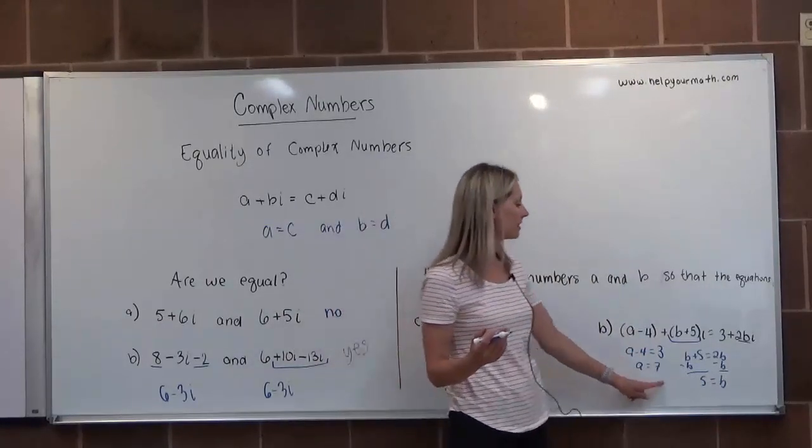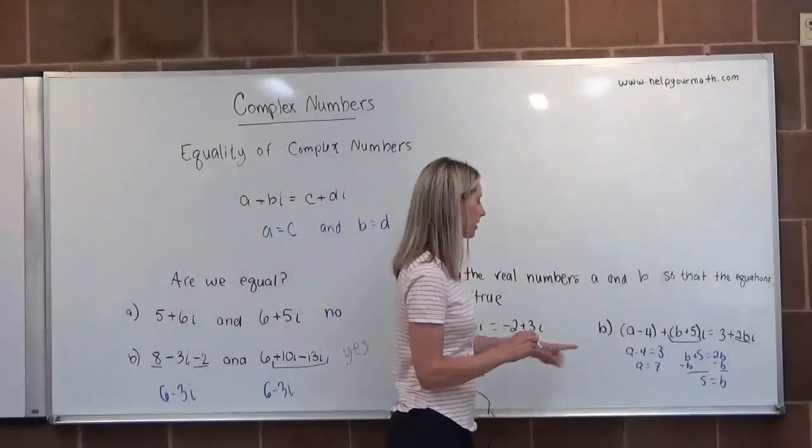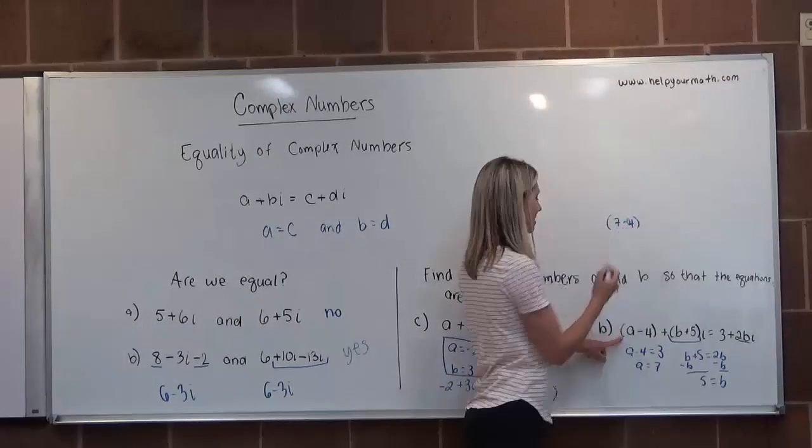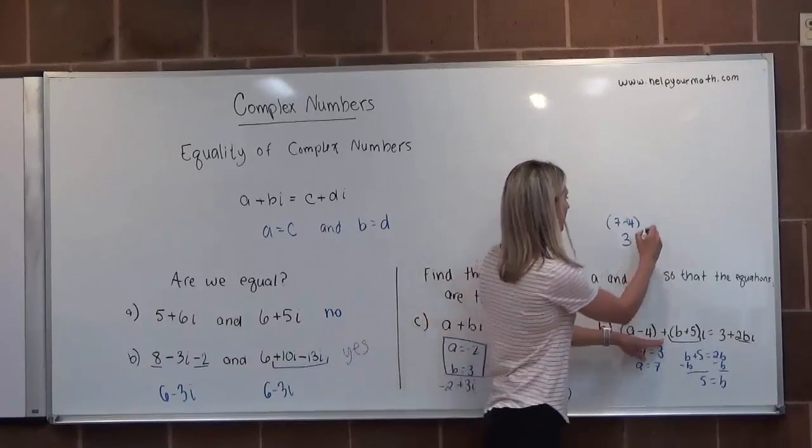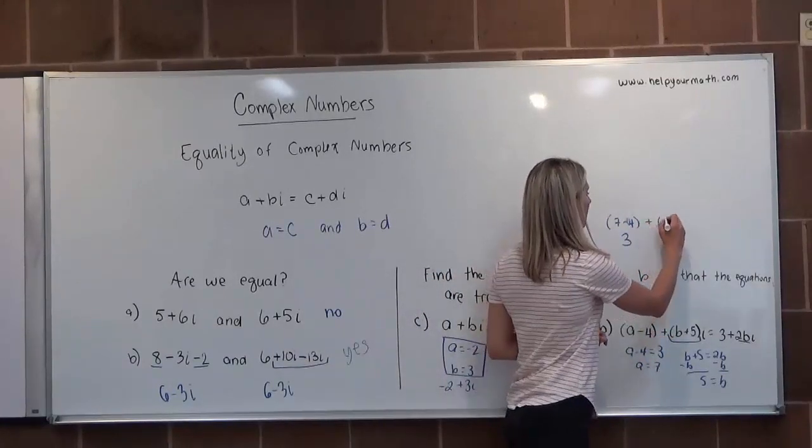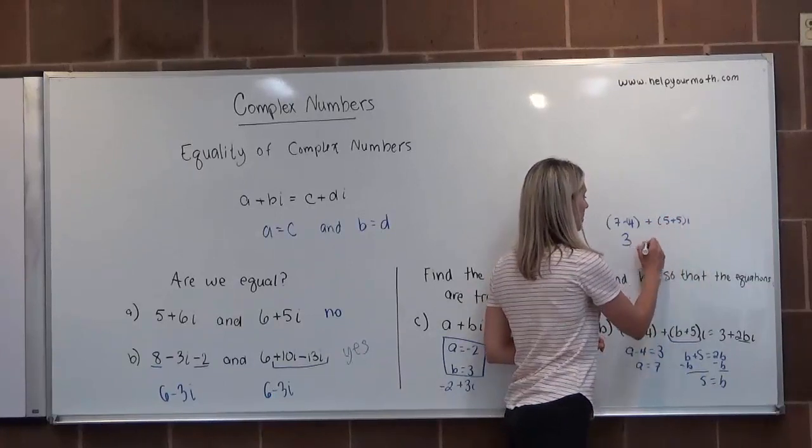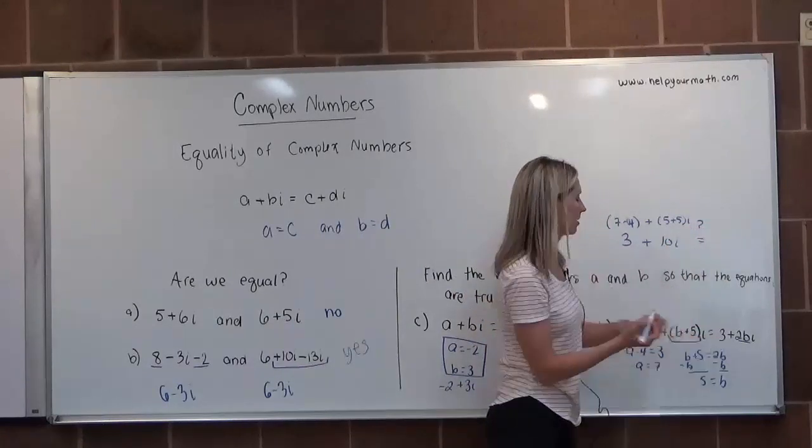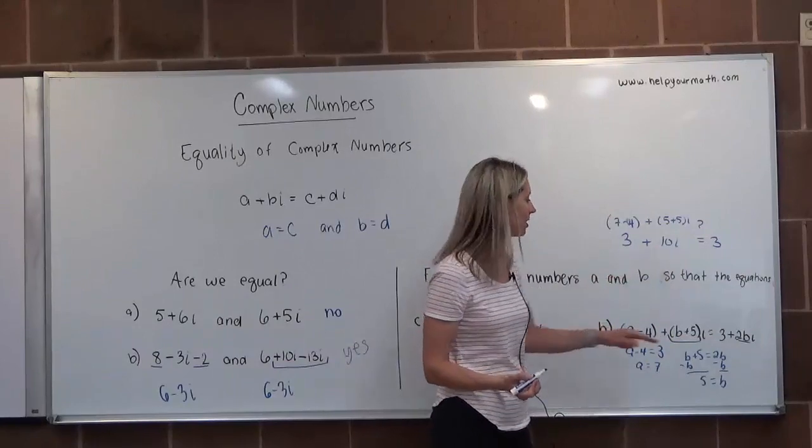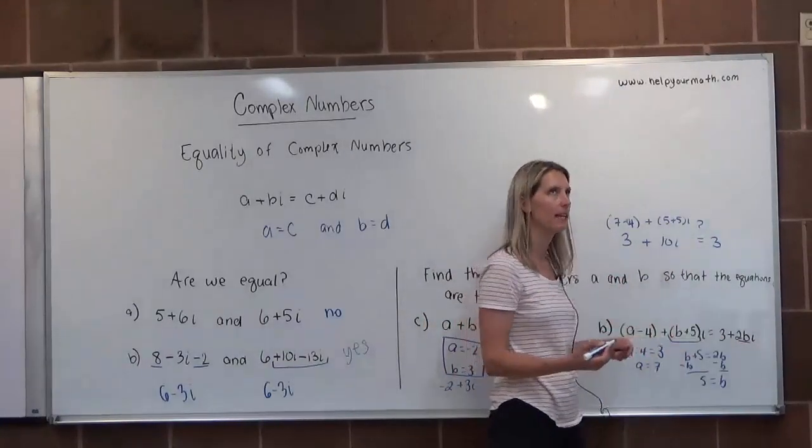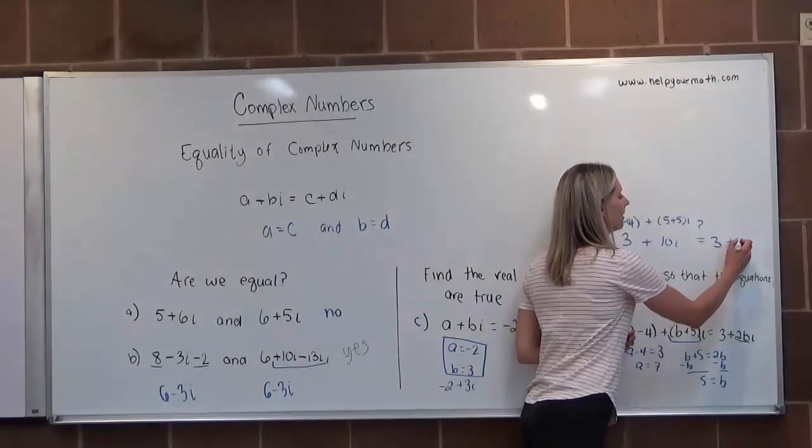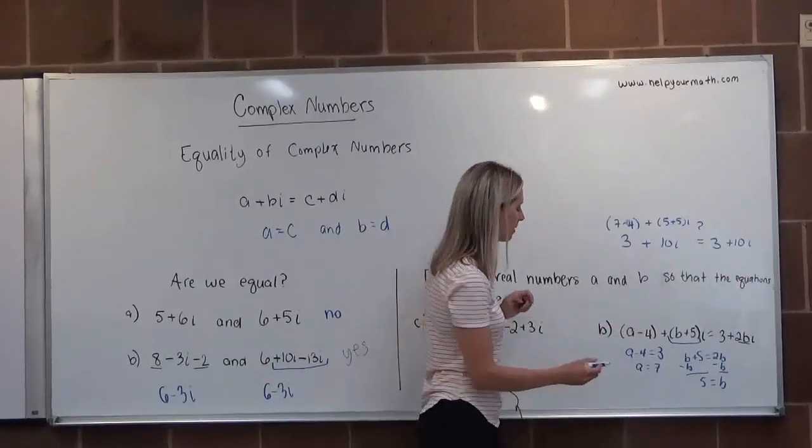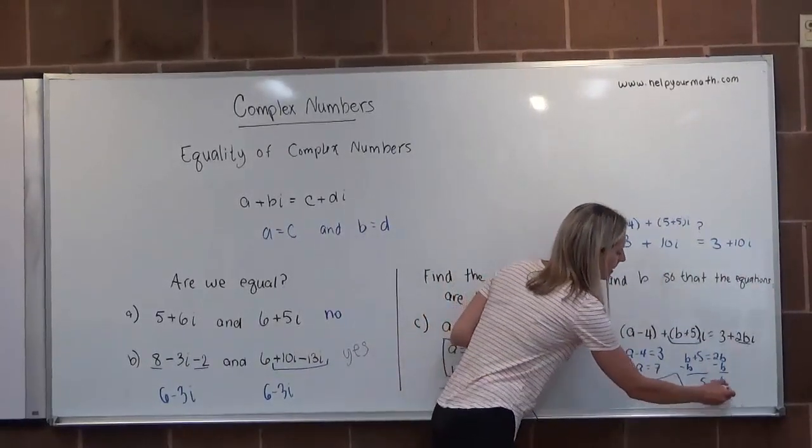Let's double check this. Let's plug in 7 and 5 and make sure we end up with two numbers that truly are equal. If I plug in 7 here, that gives me 7-4, which is 3. Then B is 5, so it would be 5+5i, which is 10i. So we have 3+10i. Over here, there's no A to plug in, so we just have 3. How about the imaginary parts? We're plugging in 5 for B, so that's 2×5=10, giving us 10i. So we get 3+10i. The real parts match and the imaginary parts match. The answer is A=7 and B=5.